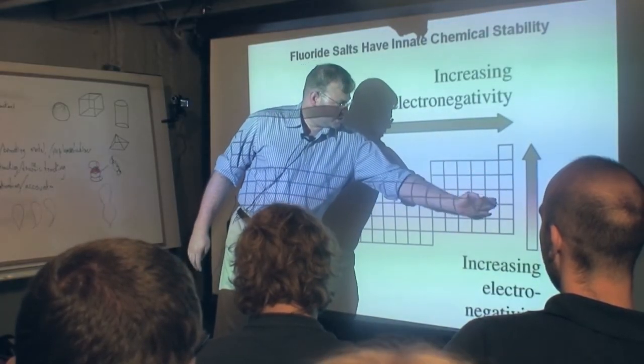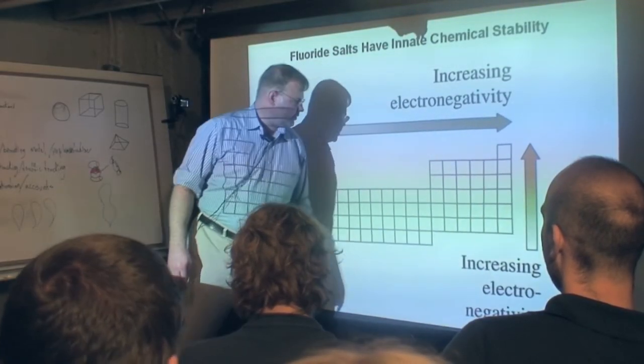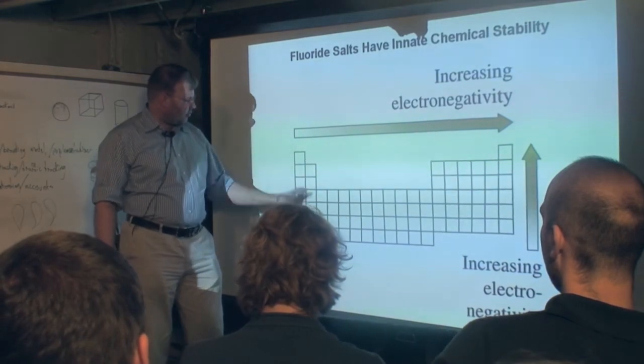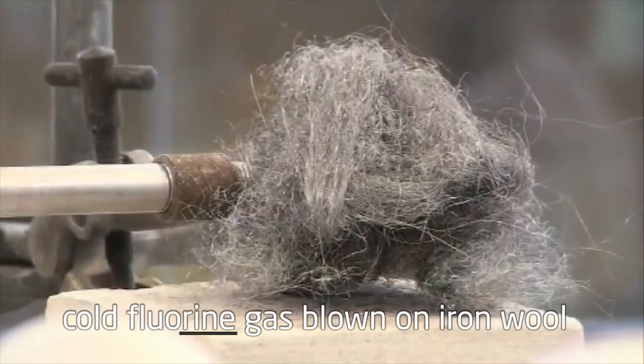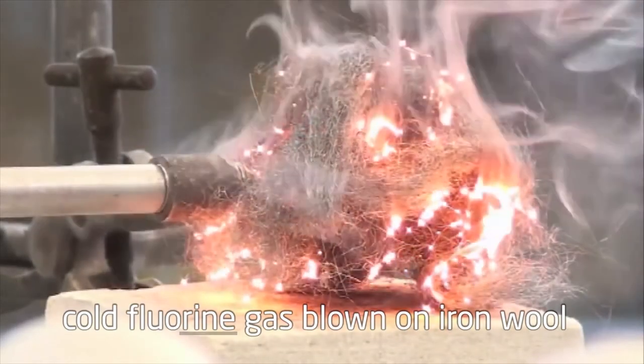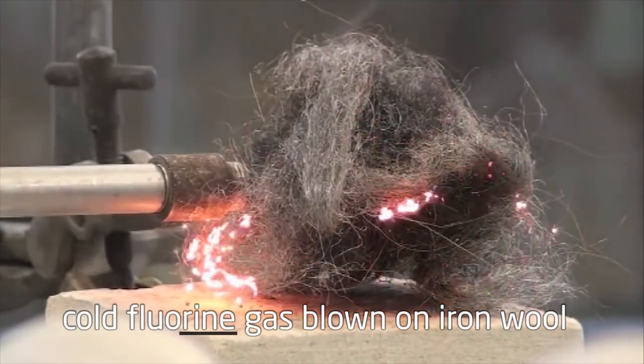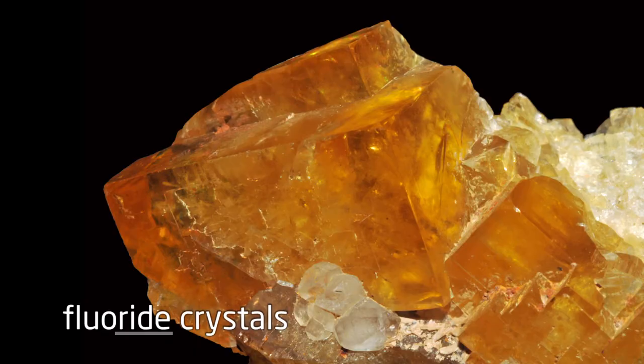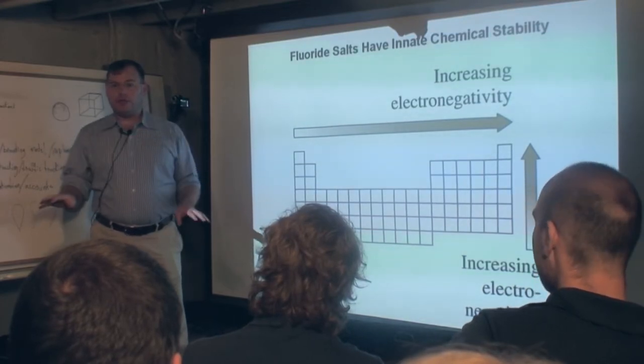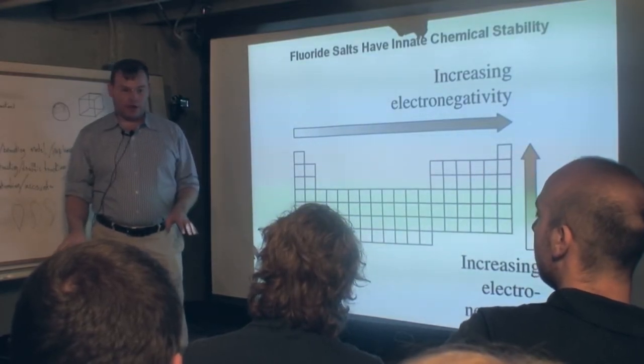A salt is composed of the stuff that's in this column, the halogens, and the stuff that's in these columns, the alkalies and the alkaline earth. Fluorine is so reactive with everything. But once it's made a salt, a fluoride, then it's incredibly chemically stable and non-reactive.